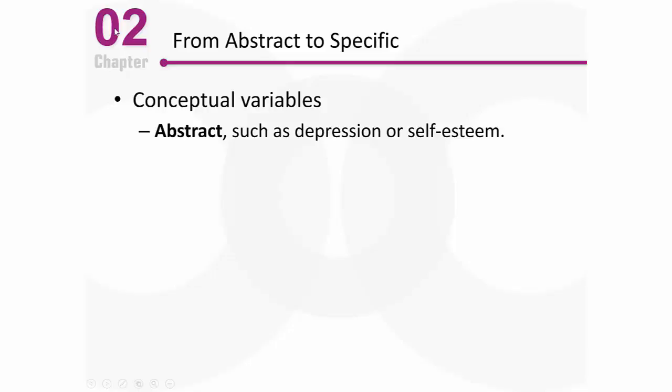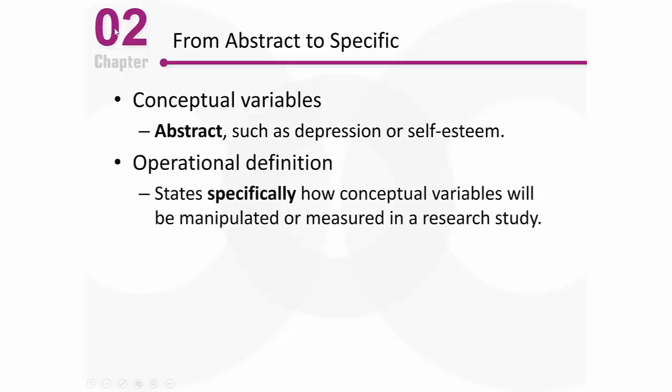For purposes of research, scientific research is all about systematic observation and measurement — we need to be very precise about what we're going to measure. That's what an operational definition is all about: stating very specifically how we are going to measure one of these conceptual variables, something like depression or self-esteem — how specifically am I going to measure it for purposes of my research study.